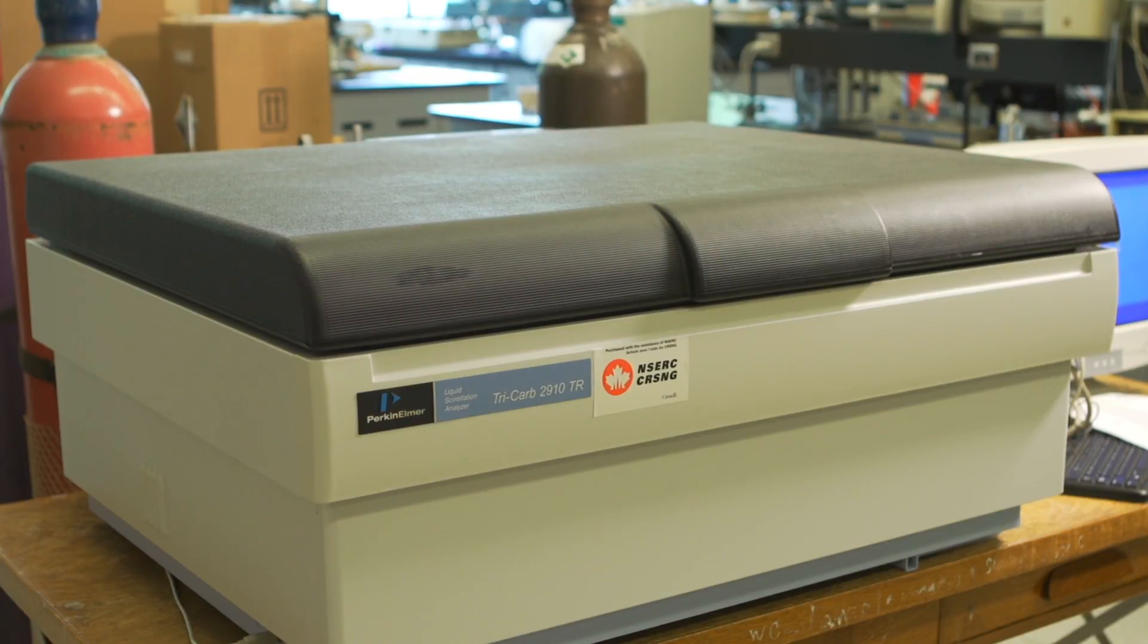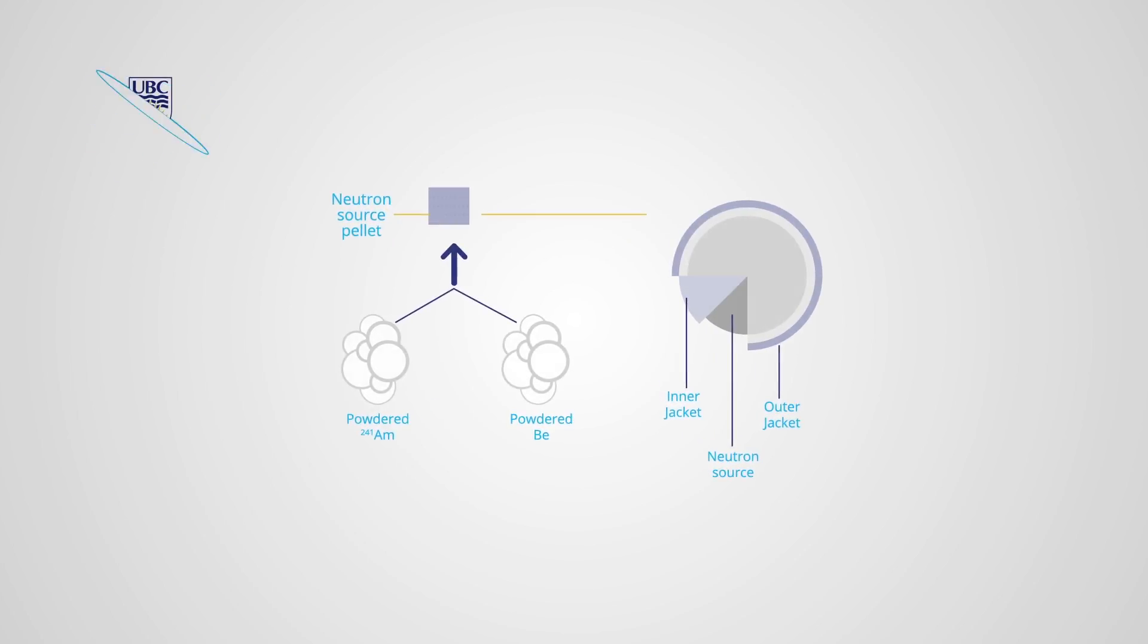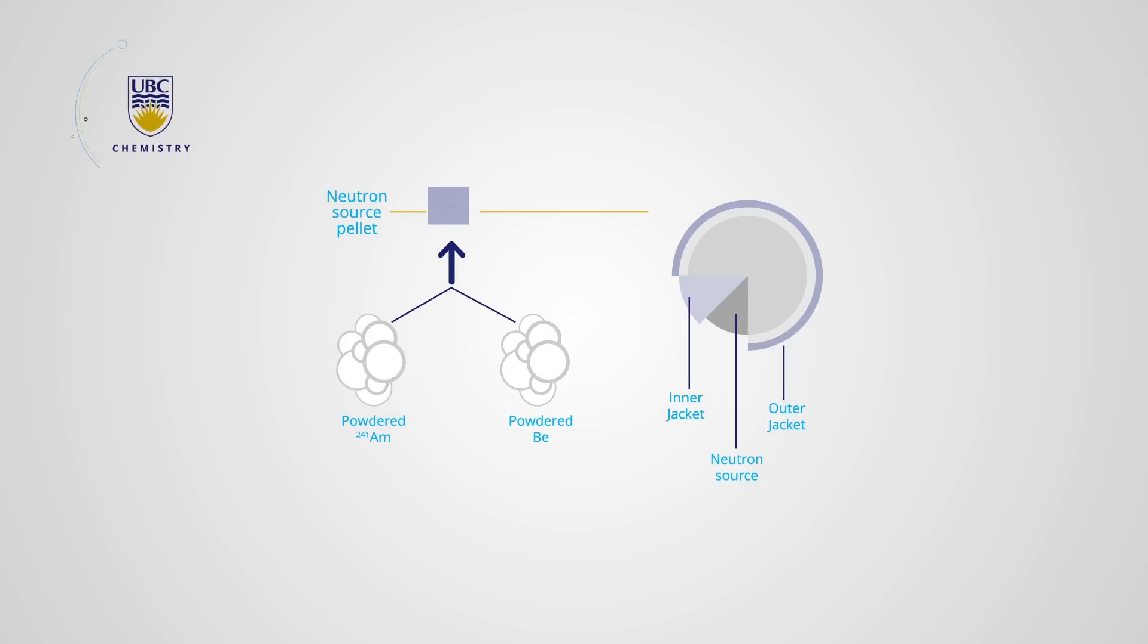We'll first look at the neutron source. The americium beryllium neutron source is an alpha neutron source. In its radioactive decay, americium emits alpha particles and the beryllium captures them and then emits neutrons. Powdered americium and beryllium are compressed together into a homogeneous pellet, forming the source.